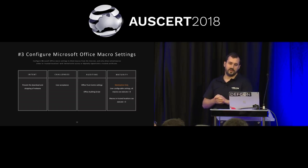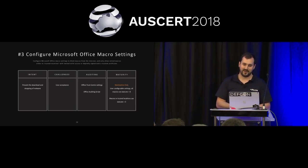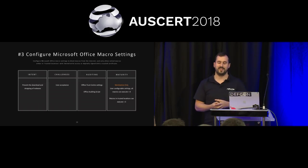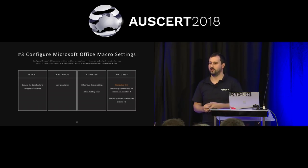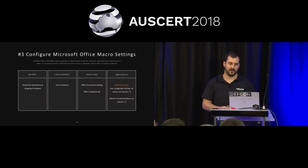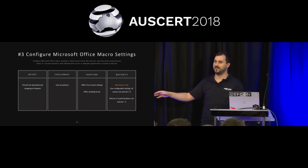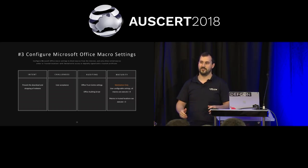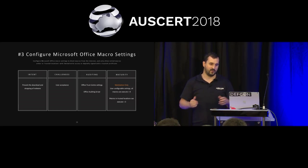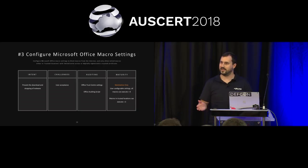Number three: configuring Microsoft Office macro settings. Macros have really increased in prevalence over the last five years. The idea is to prevent the download and dropping of malware — macros are pretty much used as a malware delivery mechanism into your environment. The challenge is user acceptance. It's terrifying as a security person to just turn off all macros across the organization without really understanding how the organization is using them, because macros are quite well used in typical businesses, and many business areas do weird and wonderful things with them.